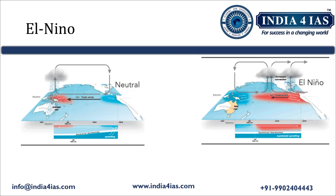La Nina is the reverse of El Niño. In normal years there is a cooler region in the eastern Pacific and a warm region in the western Pacific. During El Niño, that cooler region is replaced by warmer oceanic water in the eastern Pacific, which causes the El Niño phenomena. El Niño is one of the reasons for drought in India. La Nina, being the reverse, leads to increased rainfall in the Indian region.